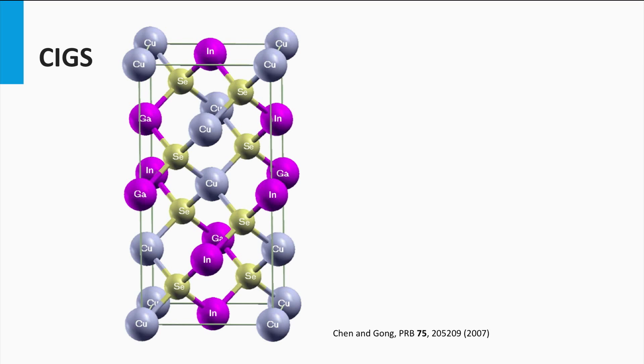The lattice atoms are tetrahedrally bonded. Such a lattice structure is a so-called chalcopyrite structure, as you can see in this illustration.